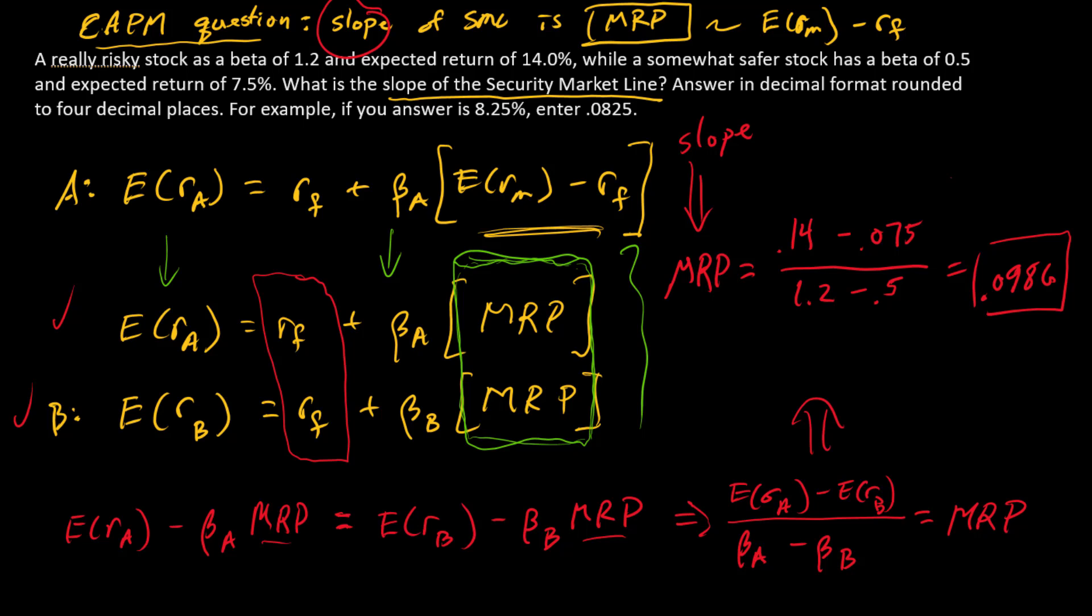What do we have here in the numerator? That's the change in expected return. So that's the change in the y value. So there's the rise. What's in the denominator? The change in betas. That's the x value in the security market line. So there's the run. And so rise over run is what algebraically? It's the slope.